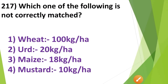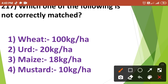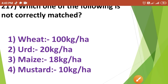Which one of the following is not correctly matched? 1. Wheat — 100 kg, 2. Urad — 20 kg, 3. Maize — 18 kg, 4. Mustard — 10 kg per hectare. The pair which is not correctly matched is Option No. 4, i.e., Mustard. The correct seed rate for mustard is 6–9 kg per hectare, not 10 kg.